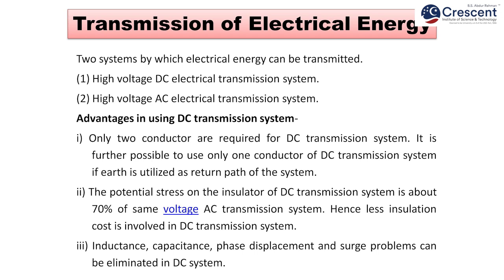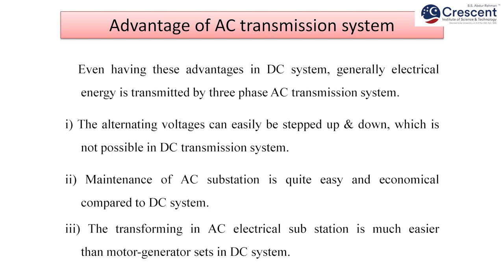Two systems by which electrical energy is transmitted are HVDC system and high-voltage AC electrical system. The advantages of using DC transmission are: only two conductors are required; the potential stress on insulators of a DC transmission system is about 70% of the same voltage AC transmission system, hence less insulation cost; inductance, capacitance, phase displacement, and surge problems can be eliminated in DC system. Even with these advantages, electrical energy is generally transmitted by three-phase AC system, because alternating voltage can easily be stepped up and stepped down, which is not possible in DC systems. Maintenance of AC substations is quite easy compared to DC systems.